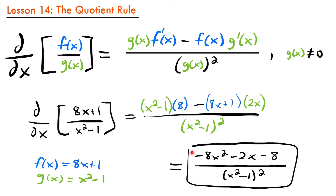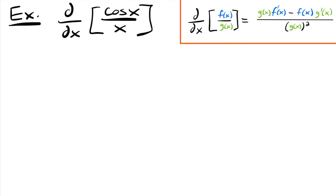If you want to try that and see if you get the same answer, you are welcome to — in fact, I would encourage it. But let's look at another example. Next we're going to look at the derivative of cosine x divided by x, which is a quotient of two functions. The quotient rule is provided here for reference.